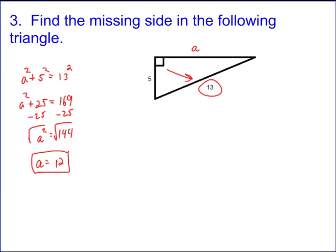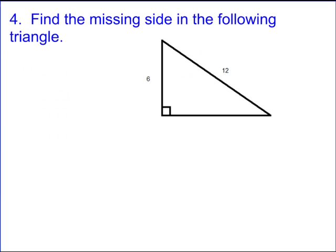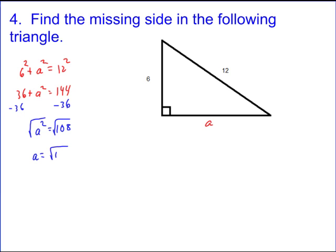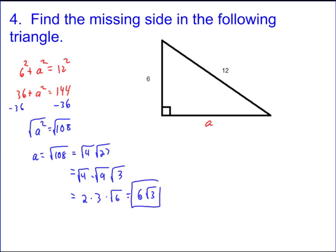Five-twelve-thirteen is another Pythagorean triple, like three-four-five. Number four: find the missing side of the following triangle. Six squared plus A squared equals twelve squared, so thirty-six plus A squared equals one forty-four. Subtract thirty-six from both sides to get A squared equals one hundred eight. Take the square root — four goes into one hundred eight twenty-seven times, and nine goes into twenty-seven three times. So you get two times three times square root of three, which is six square root of three. Our missing side is six times the square root of three. This also turns out to be a specific kind of triangle we'll discuss later.